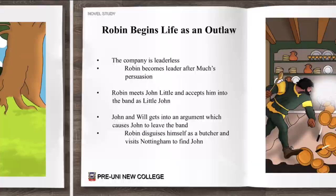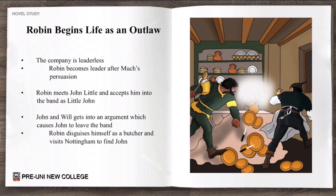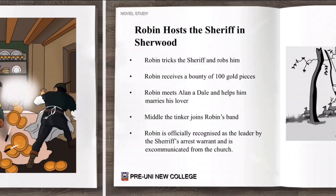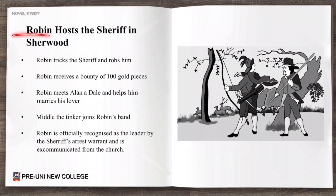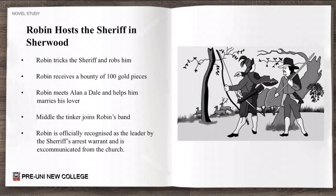Robin then begins life as an outlaw. The company is leaderless, and Robin becomes leader after much persuasion. Robin meets John Little and accepts him into the band as Little John. John and Will get into an argument, which causes John to leave the band. Robin disguises himself as a butcher and visits Nottingham to find John. Robin then tricks the sheriff and robs him of his money, receiving a bounty of a hundred gold pieces. Robin goes to meet Alan Adele and helps him marry his lover. Afterwards, Middle the Tinker joins Robin's band, and Robin is officially recognized as the leader by the sheriff's arrest warrant — he is excommunicated and banished from the church.